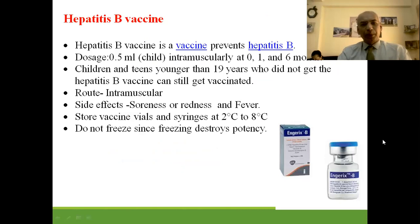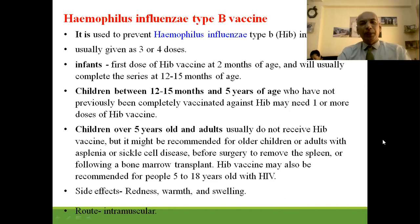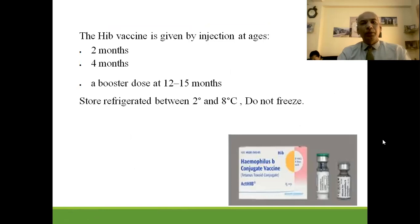Hepatitis B vaccine protects against hepatitis B disease — 0.5 ml at ages 0 to 16 months intramuscularly, stored at 2 to 8 degrees centigrade with very few side effects. Hepatitis A vaccine is effective in around 95% of cases. Given in 2 doses — 0.5 ml intramuscularly for children, 1 ml for adults — 6 to 12 months apart; side effects include soreness at the injection site, headache, loss of appetite, and tiredness. Haemophilus influenzae type B (Hib) vaccine — 3 to 4 doses starting at 2 months, series completed by 12 to 15 months, given intramuscularly, booster at 12 to 15 months, stored at 2 to 8 degrees centigrade.